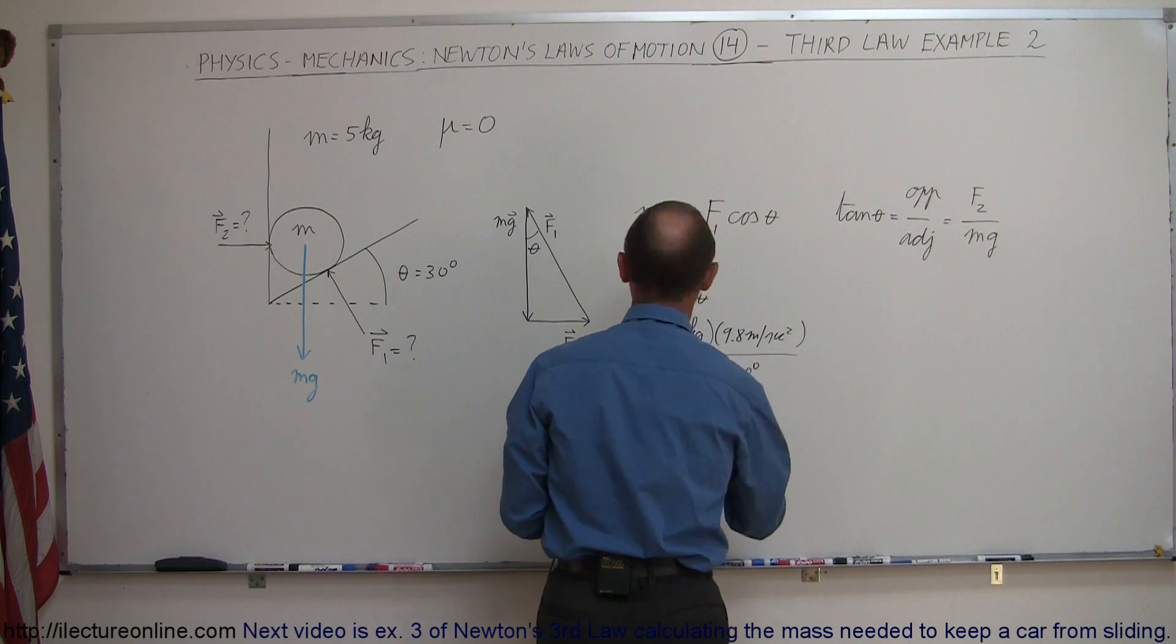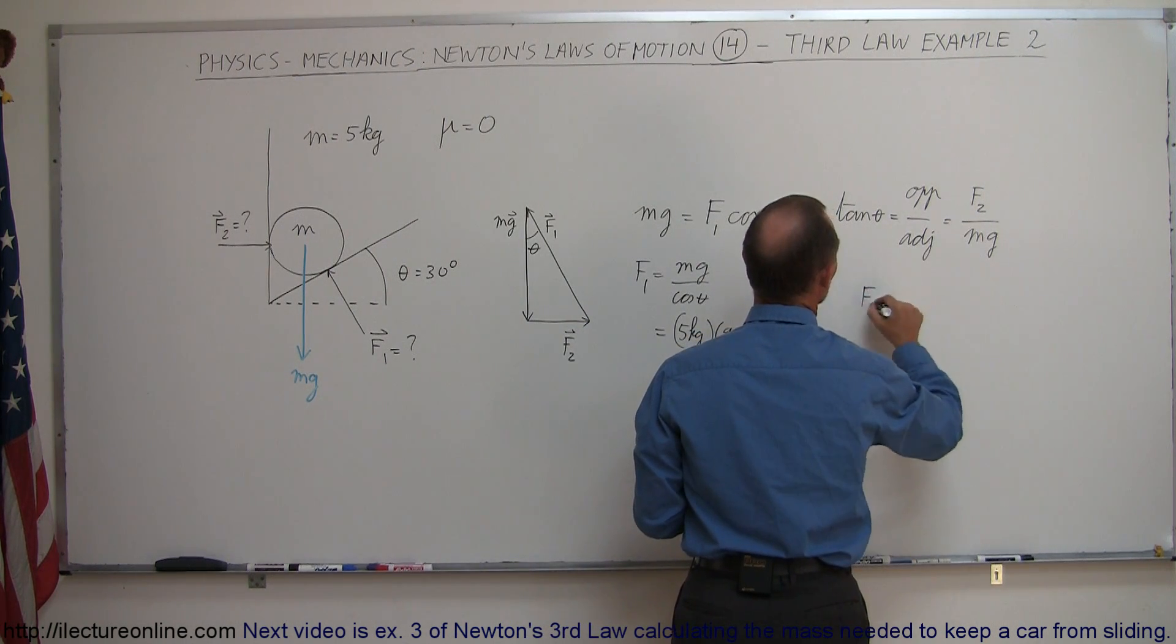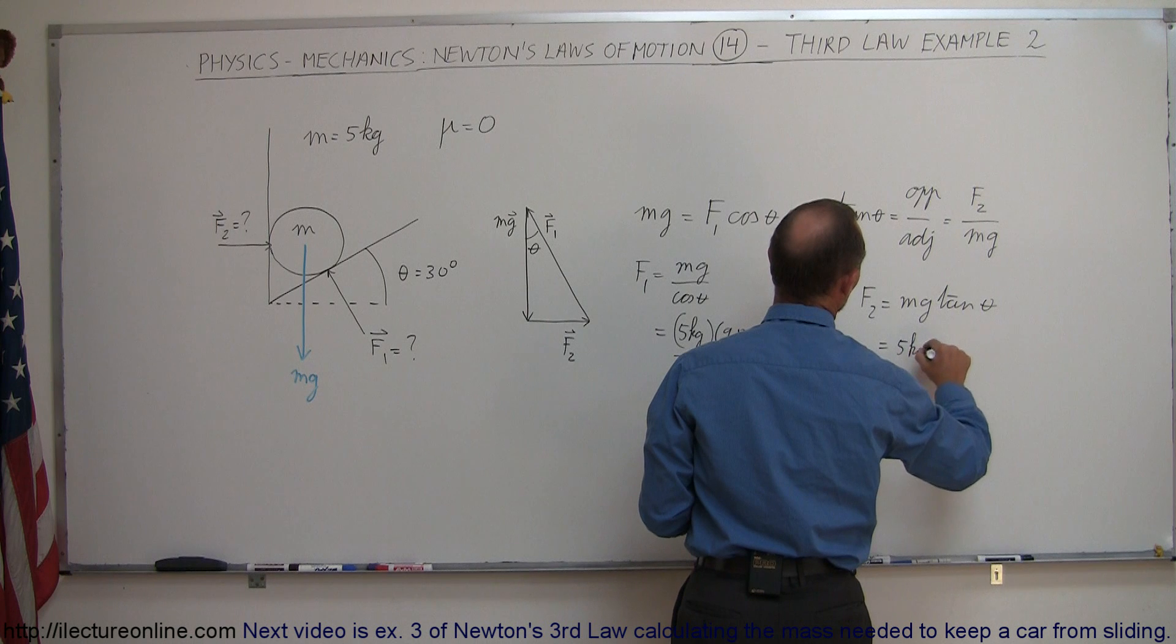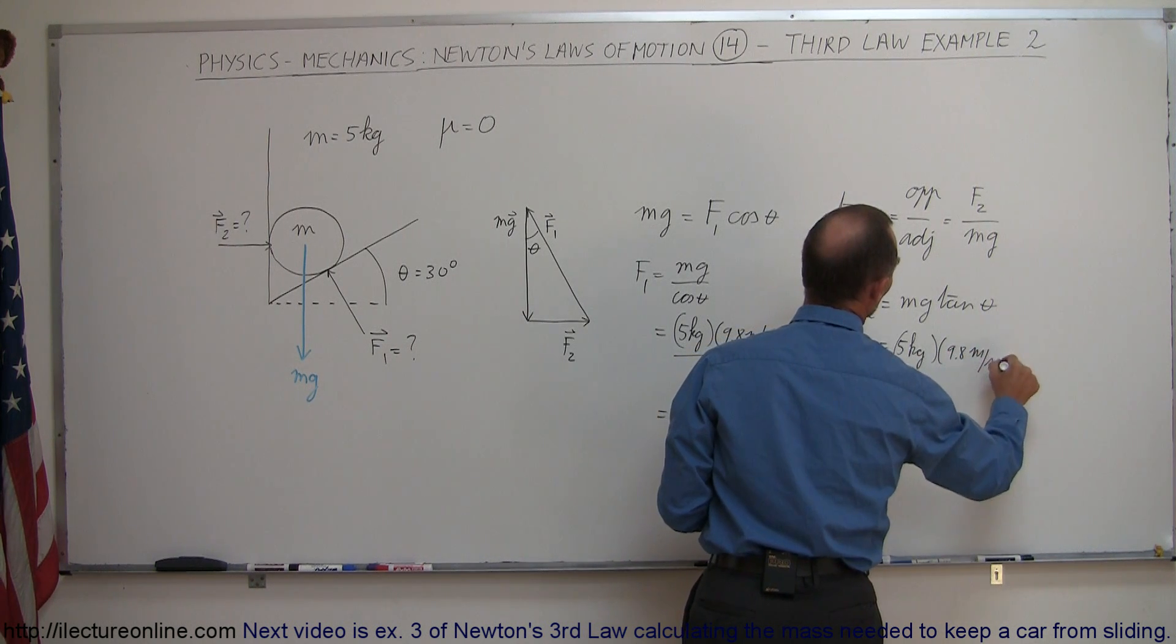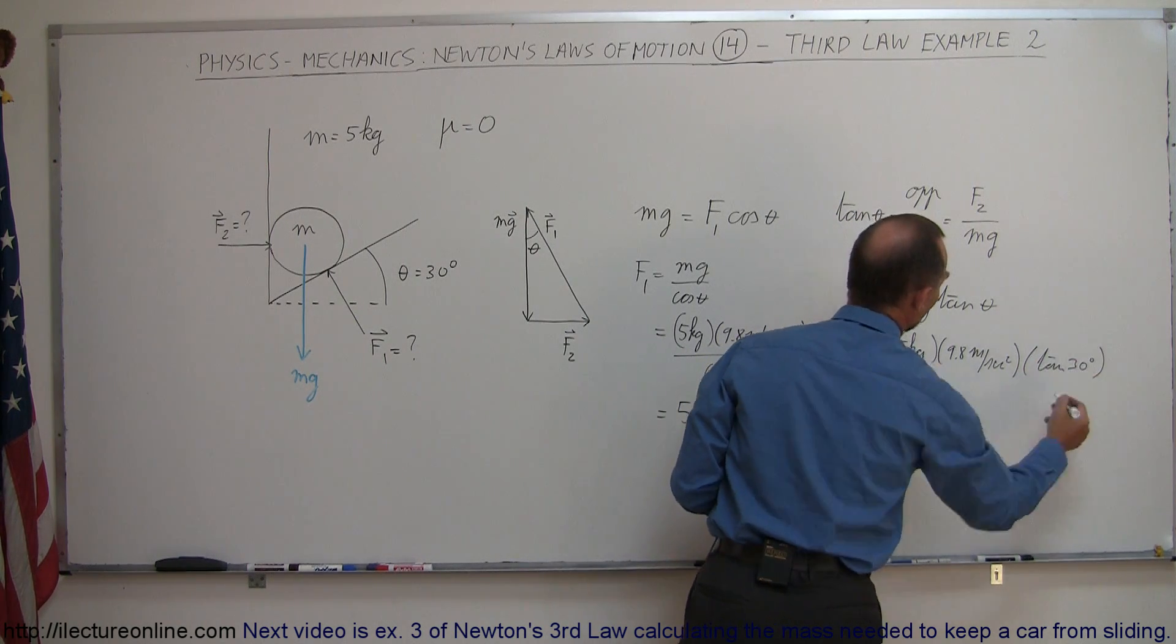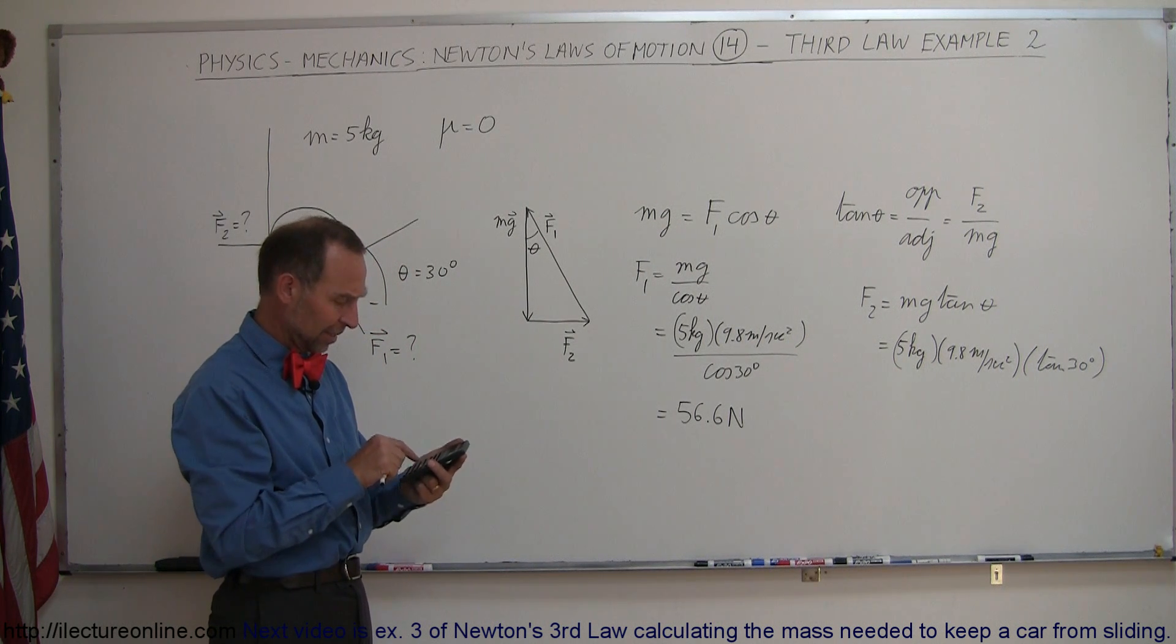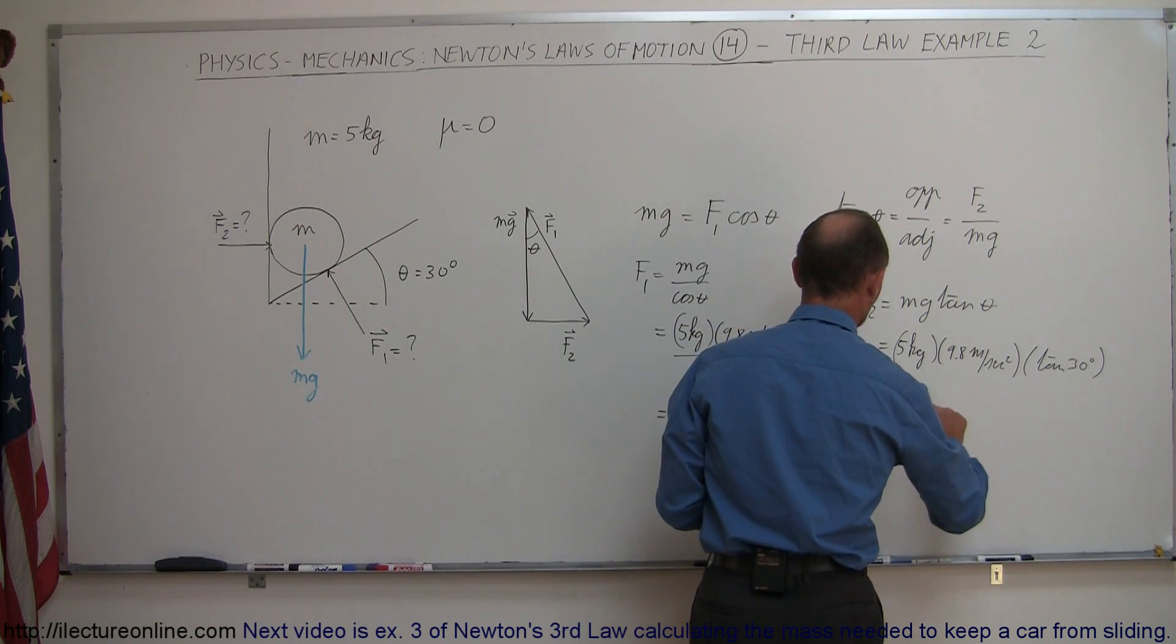For F2, we can use the second equation. F2 equals Mg times the tangent of theta, which is 5 kilograms times 9.8 meters per second squared times the tangent of 30 degrees. Taking the tangent of 30, times 9.8 times 5, we get 28.3 Newtons.